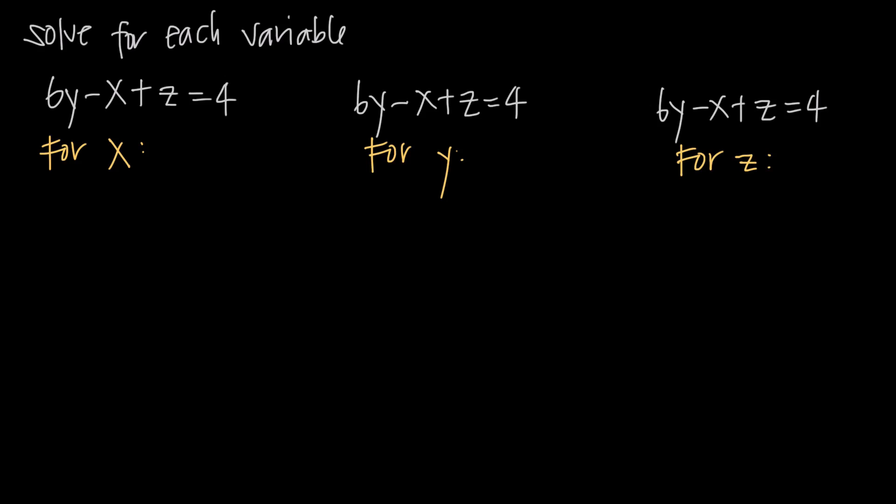In this video, we're talking about how to solve basic multivariable equations. The equation we've been given is 6y minus x plus z is equal to 4. And we've been asked to solve for each one of the variables in the equation.